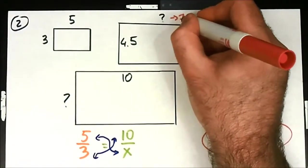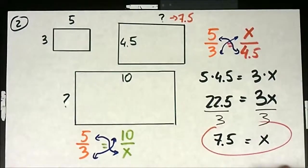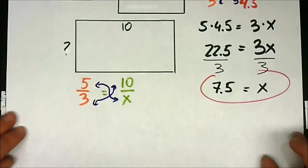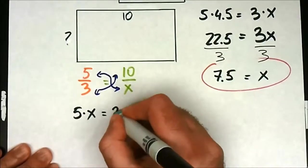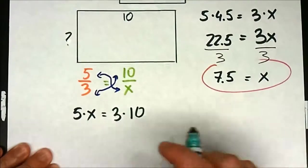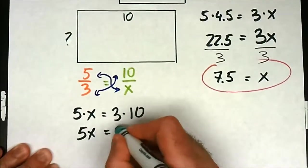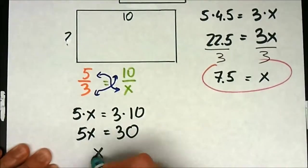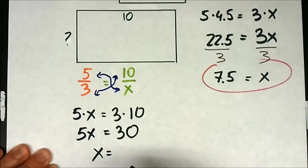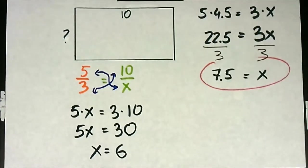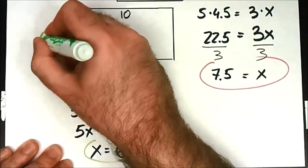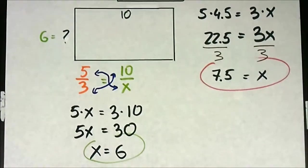Now let's do the same for the biggest rectangle. Cross products: 5 times x equals 3 times 10. What's 3 times 10? 30. And what's 30 divided by 5? 6. This one came out nice and evenly — you'll probably see more of those on the quiz. So the second missing side is 6.